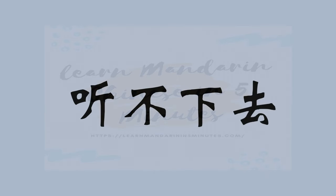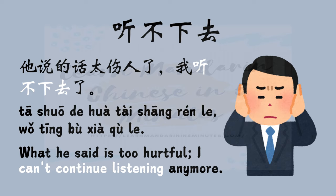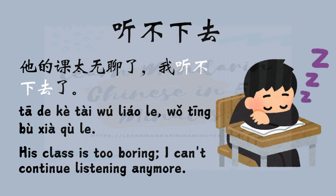听不下去 is a Chinese phrase that expresses being unable to continue listening due to discomfort, disagreement, or a strong emotional response. It typically implies that what you're listening to is unpleasant, unbearable, or offensive to the point where you cannot stand to listen anymore. For example, 他说的话太伤人了，我听不下去了 — What he said is too hurtful, I can't continue listening anymore. Another example: 他的课太无聊了，我听不下去了 — His class is too boring, I can't continue listening anymore.